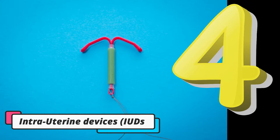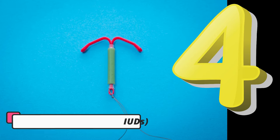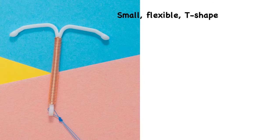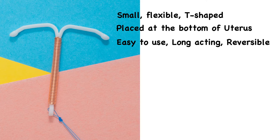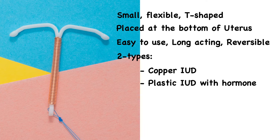The fourth method is using an intrauterine device, or IUD. An IUD is a small, flexible, T-shaped device that is placed at the bottom of the uterus. It is easy to use and is a long-acting, reversible contraceptive. IUDs are available in two types: one made of copper, and one made of plastic that contains a hormone, usually progestin.